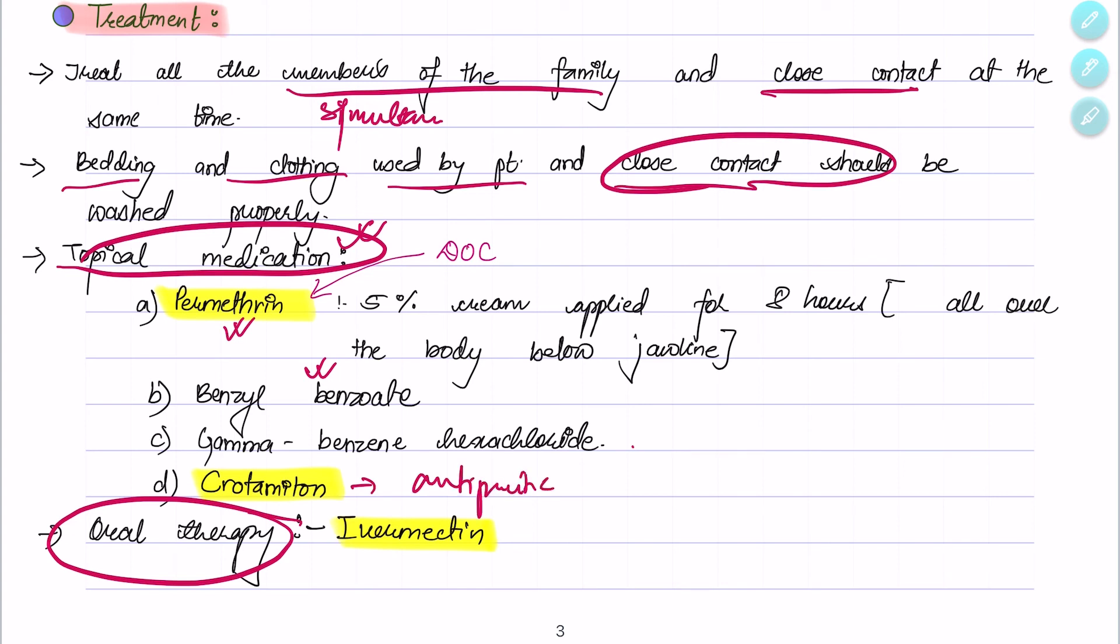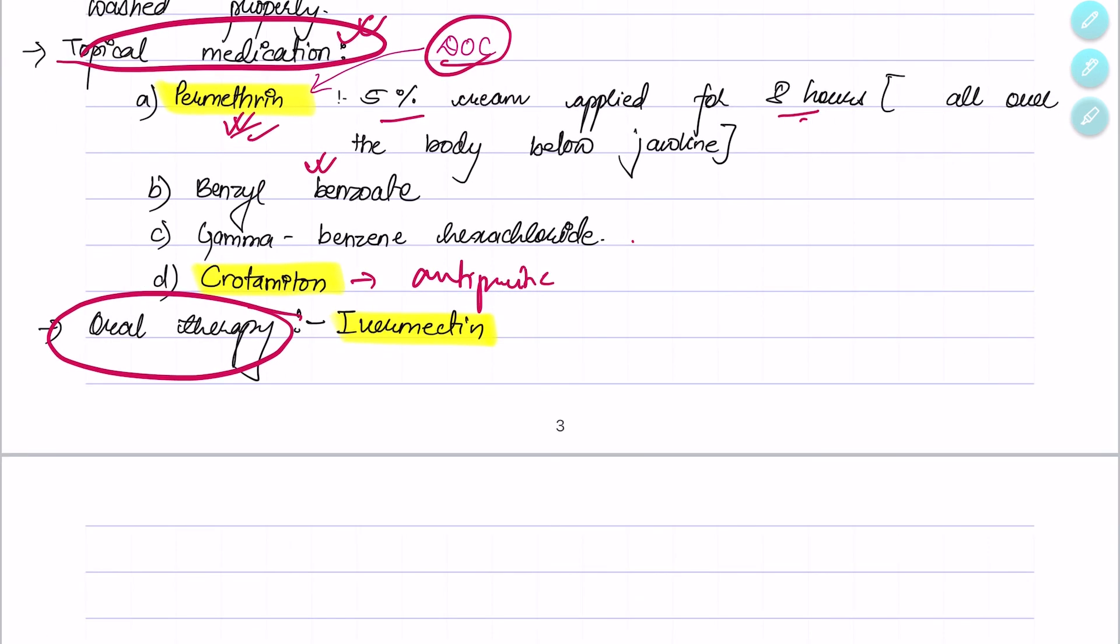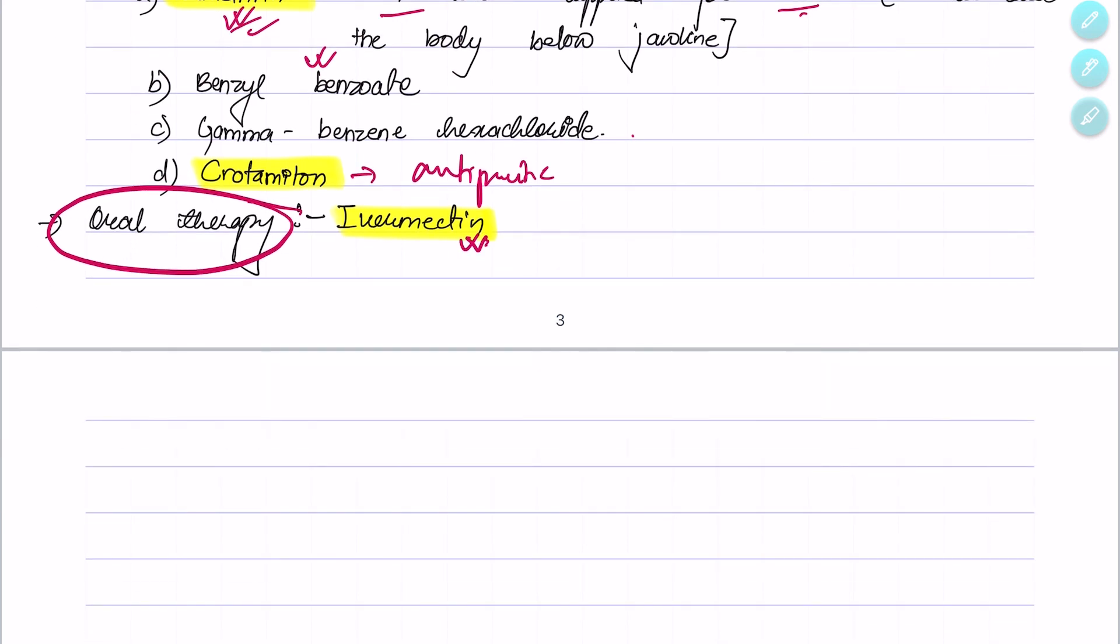Permethrin is the drug of choice. Five percent cream is applied for eight hours all over the body below the jawline. Oral therapy is given in patients where topical medications cannot be used—the oral therapy used is ivermectin. So this much for today. Hope you guys enjoyed the video. Thank you for staying till the end. Please like, share, subscribe, and stay tuned for more videos.